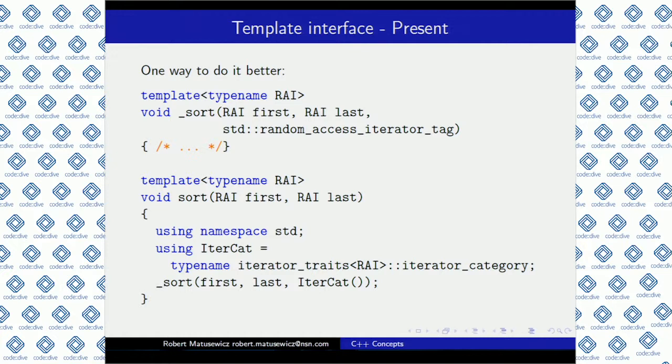One of the solutions is called tag dispatching. In that solution we have some internal function that, for this particular example of std::sort, beside those two first parameters that represent a range to be sorted, also takes a third parameter called std::random_access_iterator_tag. This is used just for providing some overall function that will be valid only if the iterator category is the same as std::random_access_iterator_tag, or at least convertible to that tag.